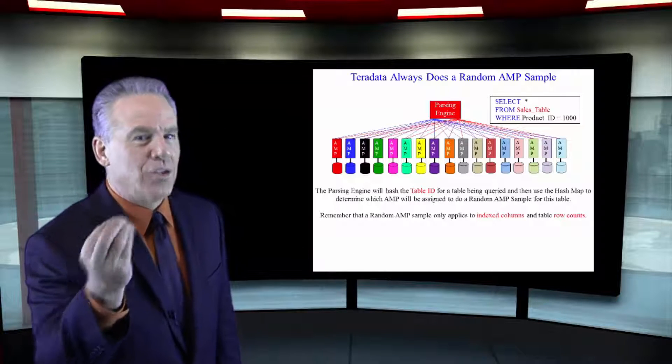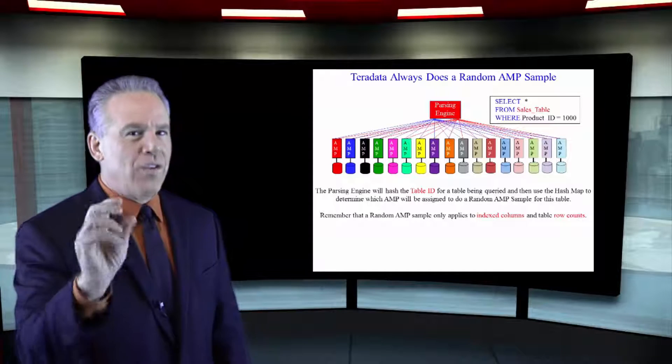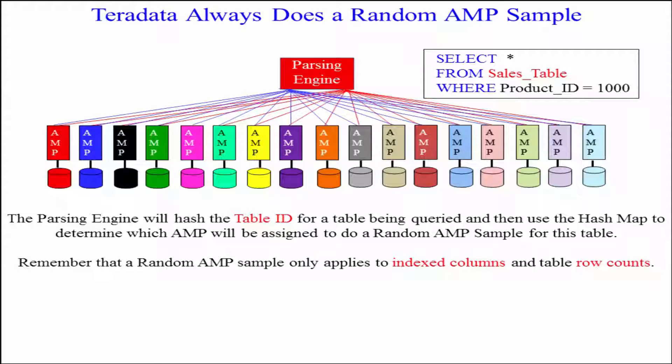Ask it how many rows it has on the sales table. Then we should just multiply that by all the other AMPs in the system. We should get a good estimate here. That was the random AMP sample.